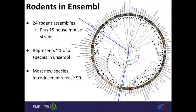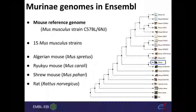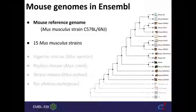We currently have 24 rodent assemblies — about a quarter of all species in Ensembl. This includes 15 house mouse strains of the species Mus musculus, which we'll focus on today, as well as rat and several other Mus genus species. Most of these were introduced in release 90, just over a year ago. Looking specifically at the Muridae sub-family, we have the mouse reference genome, 15 musculus strains, three other Mus genus species, and rat.